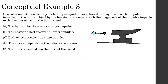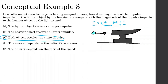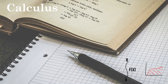In a collision between two objects of unequal masses, how does the impulse on the lighter object compare to the impulse on the heavier object? By Newton's third law, they experience equal and opposite forces. Since they're in contact for the same amount of time, both objects receive the same magnitude of impulse, just in opposite directions. The answer is C. Next time, we'll be talking about some calculus-based problems on this chapter.